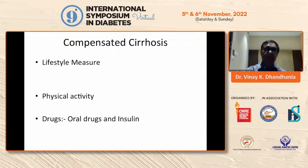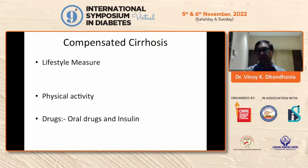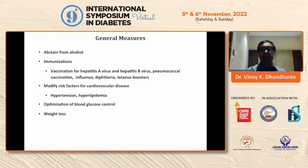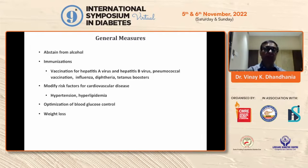Patients with compensated cirrhosis may have minor signs like spider nevi, palmar erythema, early clinical signs of liver cirrhosis, and hepatosplenomegaly on ultrasonography. General measures for all patients include abstaining from alcohol, immunization such as hepatitis A and B vaccination, pneumococcal vaccination, influenza vaccination, and DPT booster. Additionally, modify cardiovascular risk factors like hypertension and hyperlipidemia, and optimize blood glucose control and weight loss.